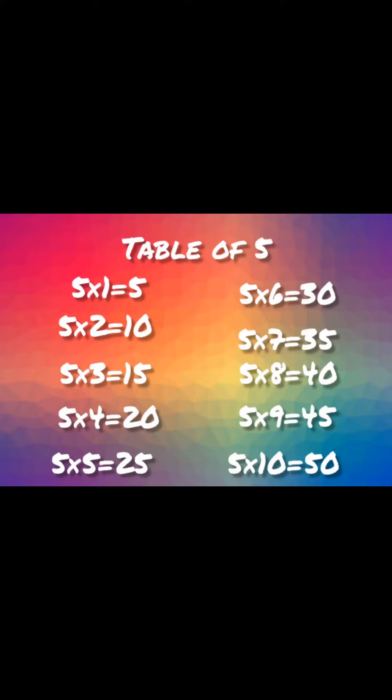Five sixes are thirty. Five sevens are thirty-five. Five eights are forty. Five nines are forty-five. Five tens are fifty.